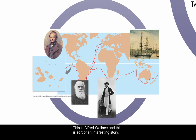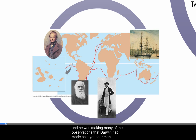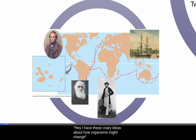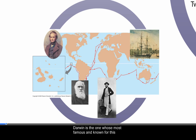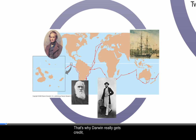This is Darwin as a much older man when he actually did his publishing. This is Alfred Wallace, and this is an interesting story about how the personalities of the time affected the science. Alfred Wallace was doing work in that part of the world, making many of the same observations Darwin had made. He admired Darwin and wrote him a letter saying he had ideas about how organisms might change and wanted to know what Darwin thought. Darwin realized this person had come up with the same theory, so they corresponded and decided to publish their information together. Darwin is most famous for this because he went on to publish 'The Origin of Species' two years later, expanding upon the theory.